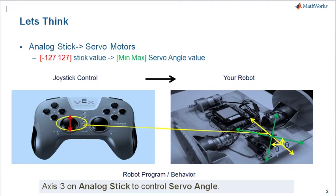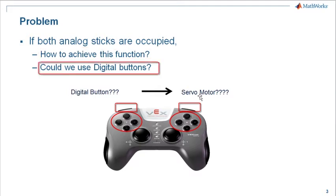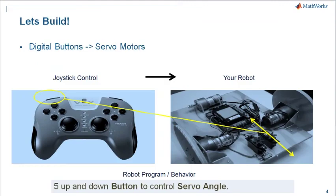Now, let's think of a situation where both analog sticks on your VEX controller are occupied in controlling other H-bridge motors. In this situation, how do you achieve the control of your servo motors? Well, we could use these digital buttons to control the servo motors on your robot. Let's go ahead and see in Simulink how we can use these digital buttons on the joystick to control the servo motors.